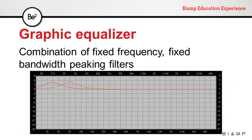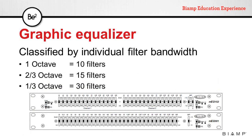Graphic equalizers are probably the best known type. They are a combination of fixed frequency, fixed bandwidth peaking filters. Depending on the filter bandwidth, graphic equalizers can be classified as one octave having 10 filters, two-thirds octave having 15 filters, or one-third octave having 30 filters. The name graphic comes from the user interface, as it resembles the frequency response graph.